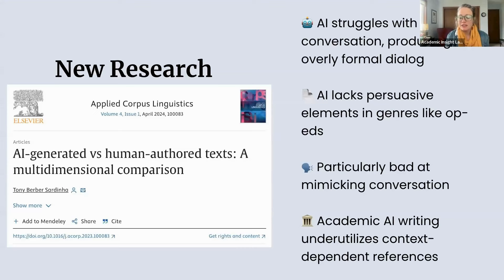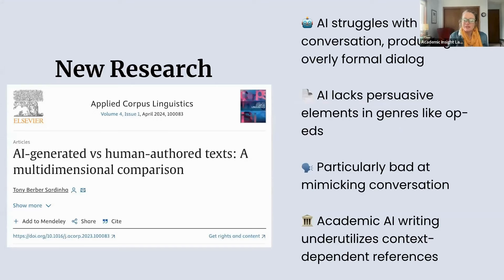The first major finding is that the AI was not able to produce natural conversation — it was overly formal and stilted, sometimes even old-fashioned. The second important finding is that AI lacked persuasive elements in genres like op-eds — opinion articles for newspapers. The study looked at different registers: conversation, news, and academic language. It missed the mark in conversation because it was overly formal, and in op-eds because the argumentative element wasn't there.